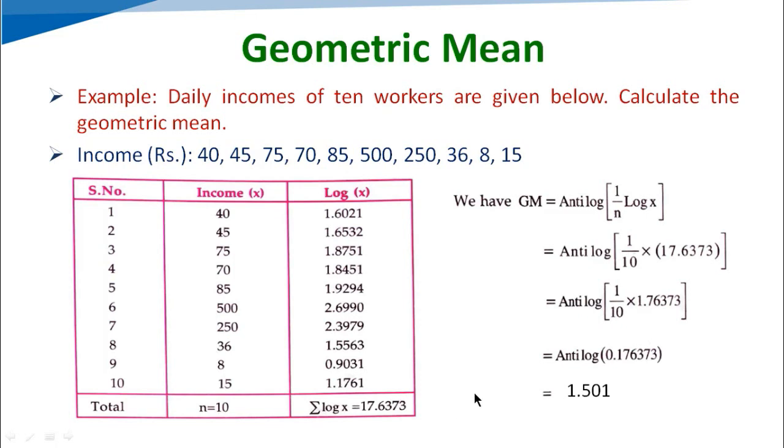Let's take an example. Daily incomes of 10 workers are given below. Calculate the geometric mean. The data given is: 40, 45, 75, 70, 85, 500, 250, 368, and 15. So total number of data we have is 10.